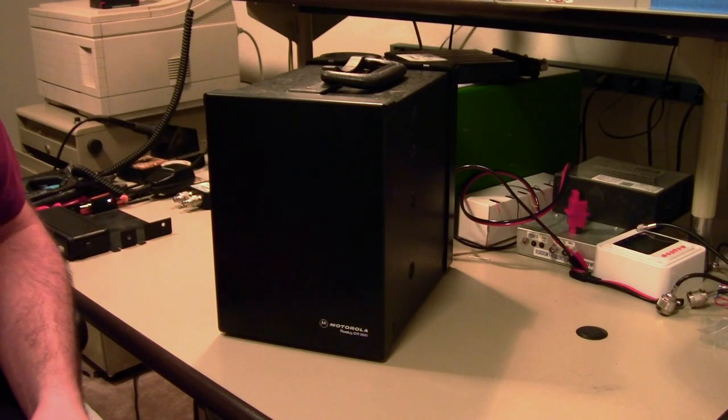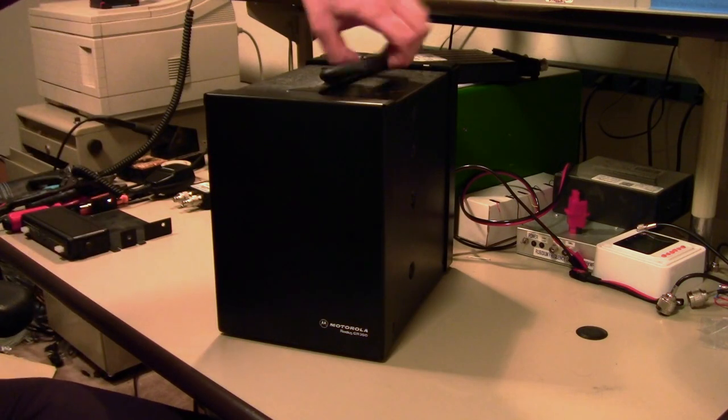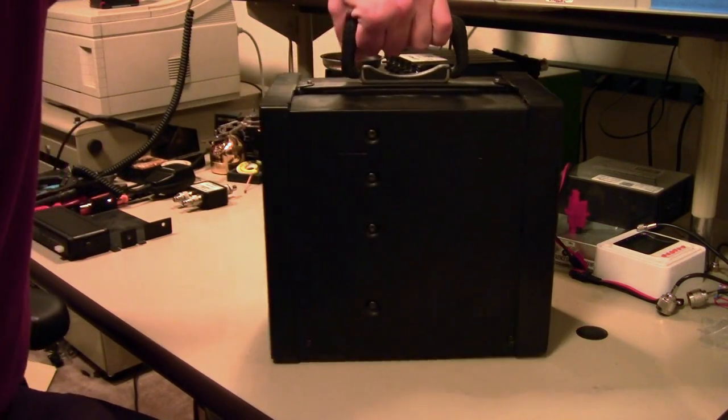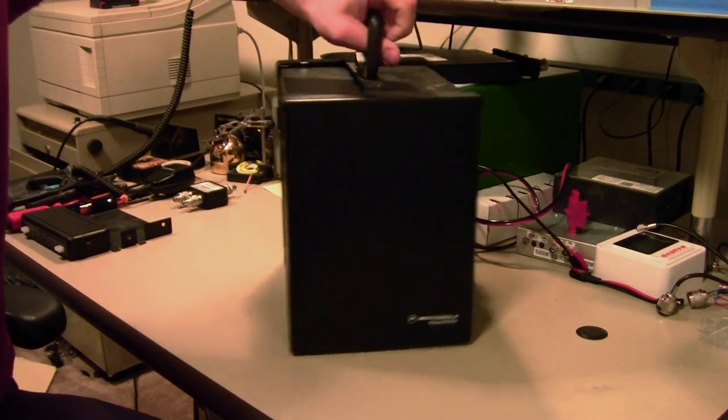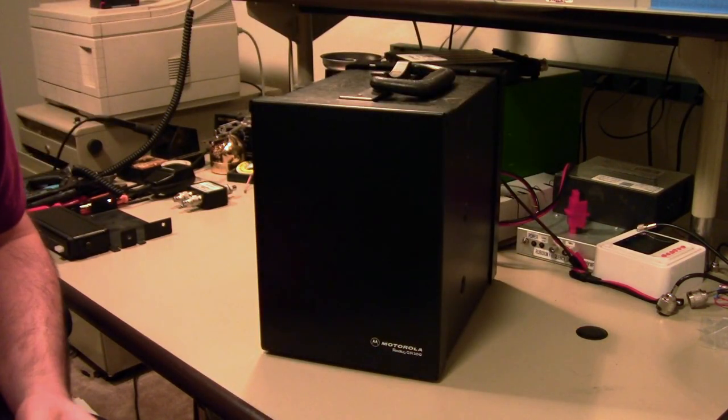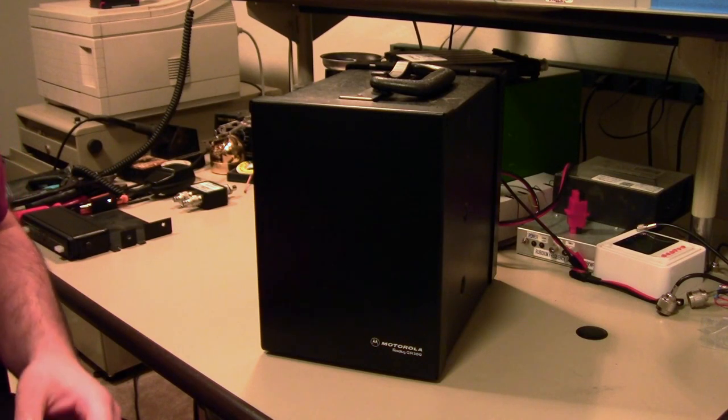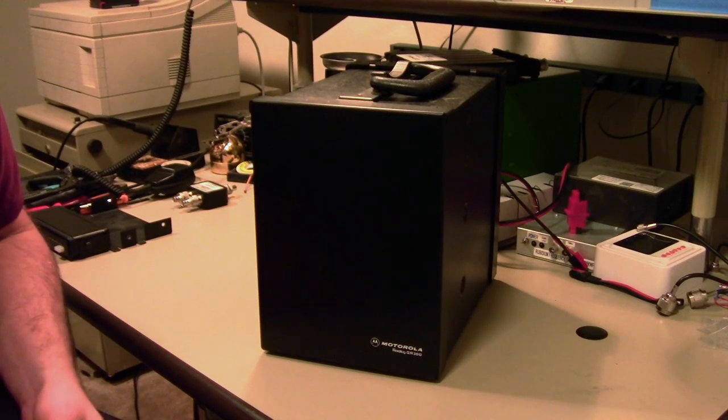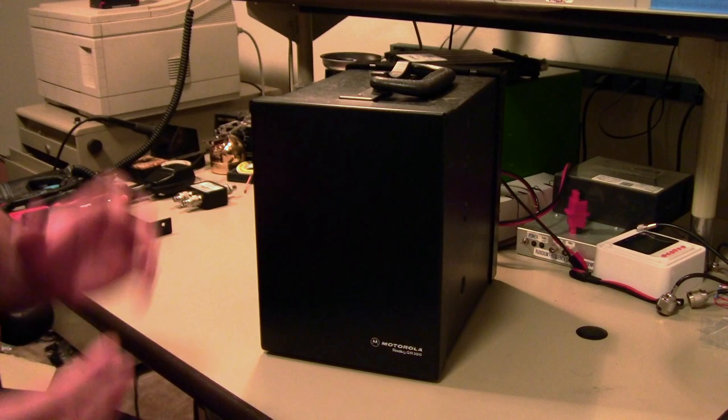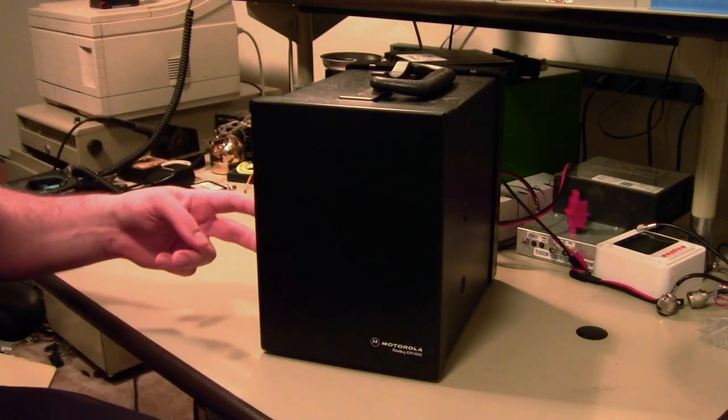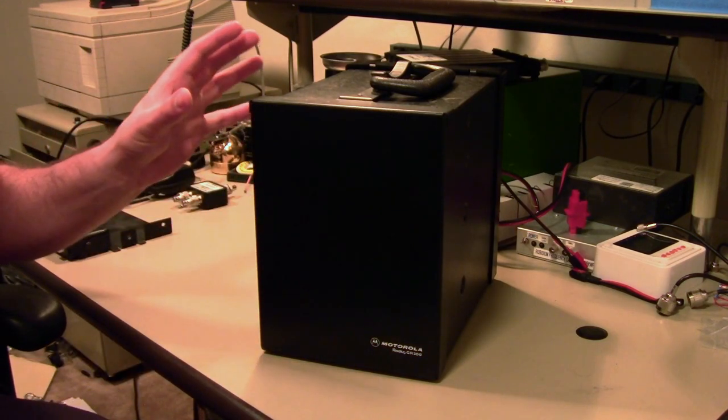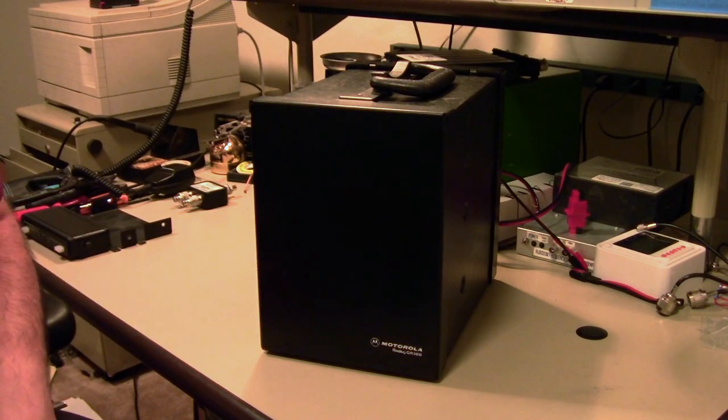The wall mount version of it was the GR500, and then the next step up from it was the GR1225. I like the GR300 because it is relatively small, and it's an extremely modular repeater. It's not a repeater transceiver in an enclosure. It is two Motorola mobile rigs with a controller, power supply, and optional duplexer.